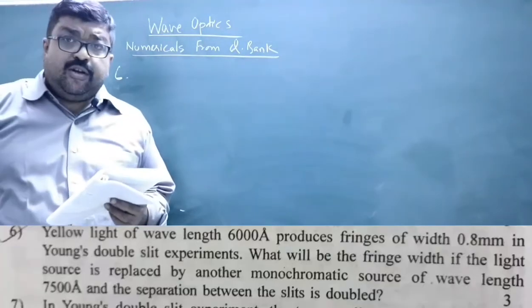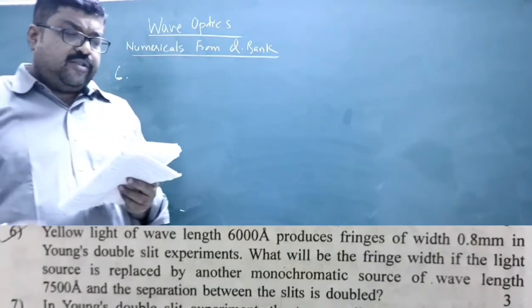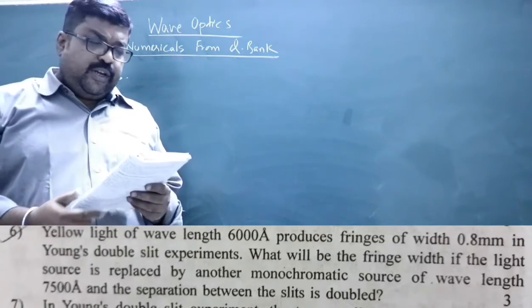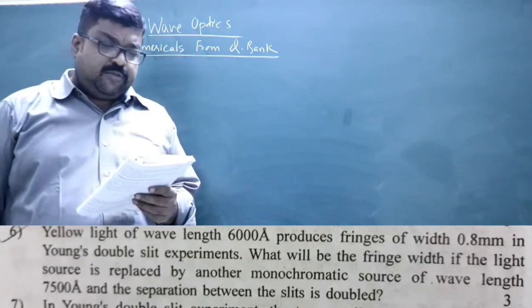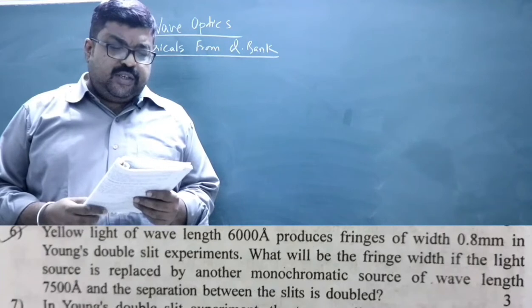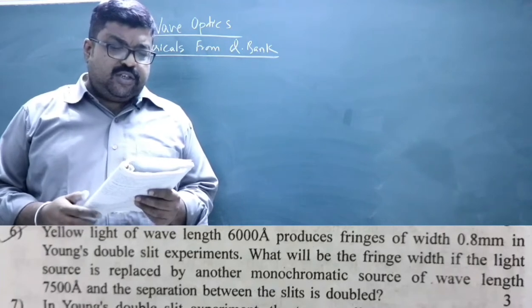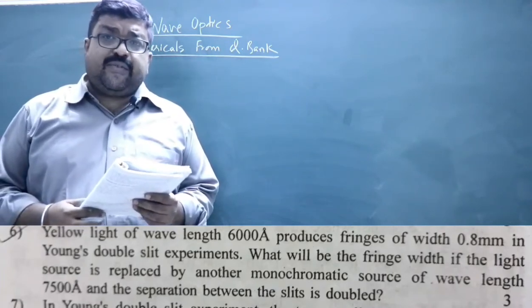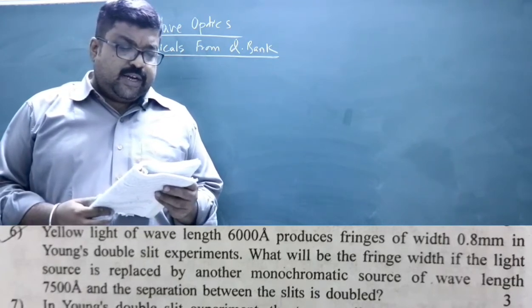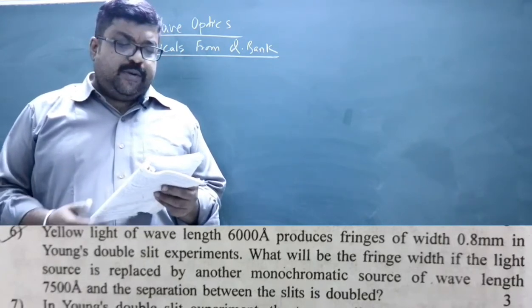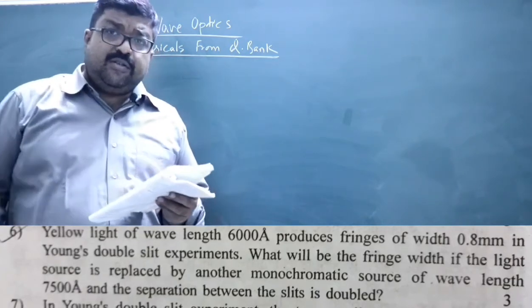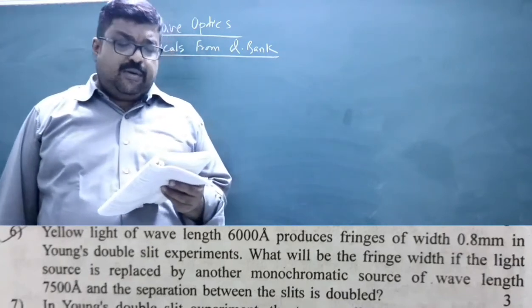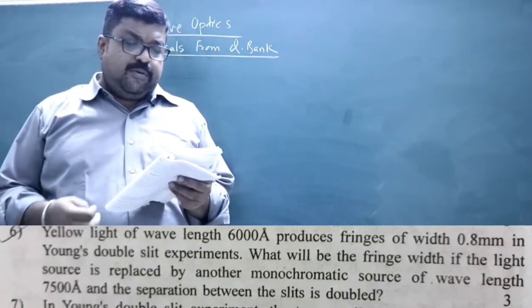Question number six: Yellow light of wavelength 6000 Å produces fringes of width 0.8 mm in Young's double slit experiment. What will be the fringe width if the light source is replaced by another monochromatic source of wavelength 7500 Å and the separation between the slits is doubled? This is based on the same formula β = λD/d, with the slit separation doubled in the second case.